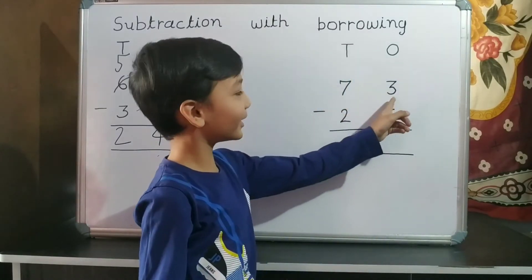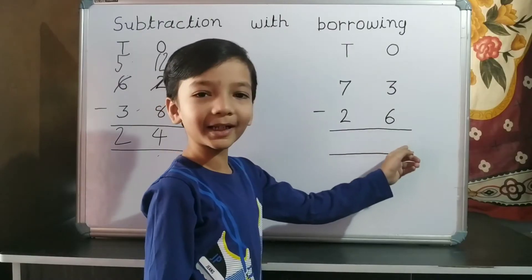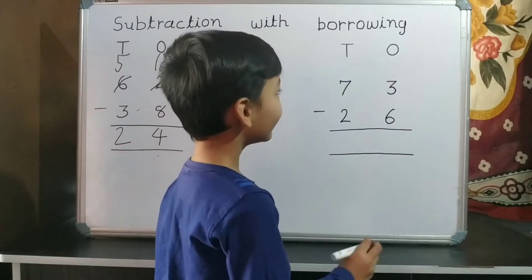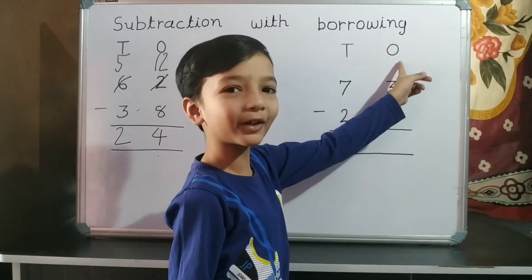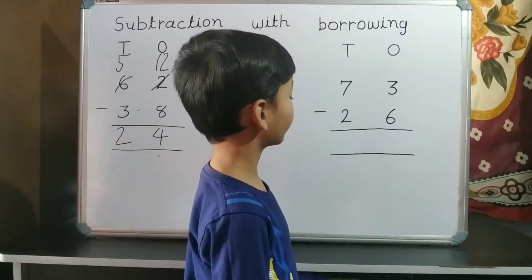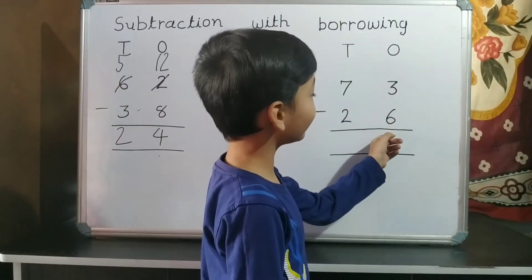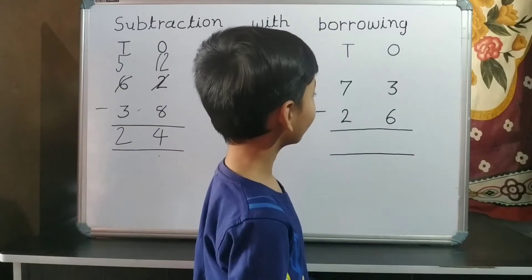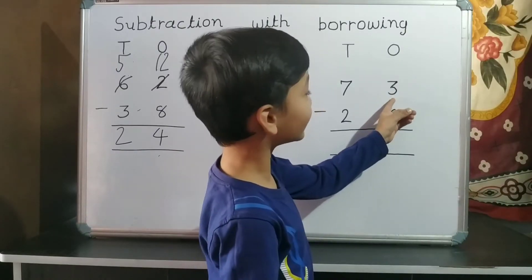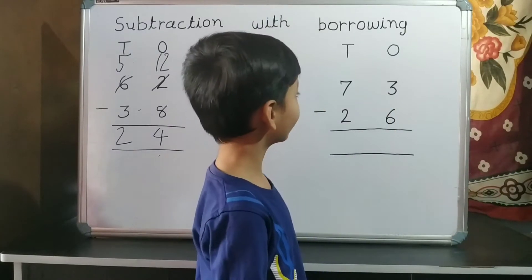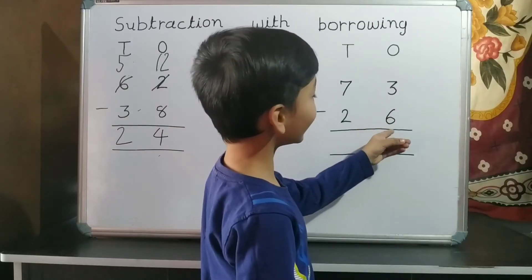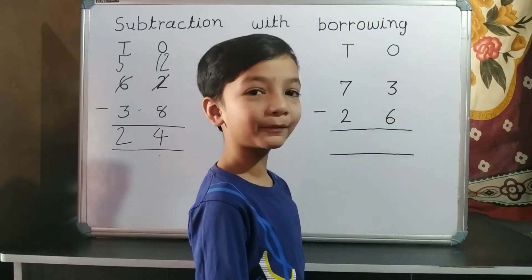Second sum. 73 minus 26. First we do subtraction of 1's place. 3 minus 6. 3 is smaller than 6, so we cannot subtract 6 from 3.